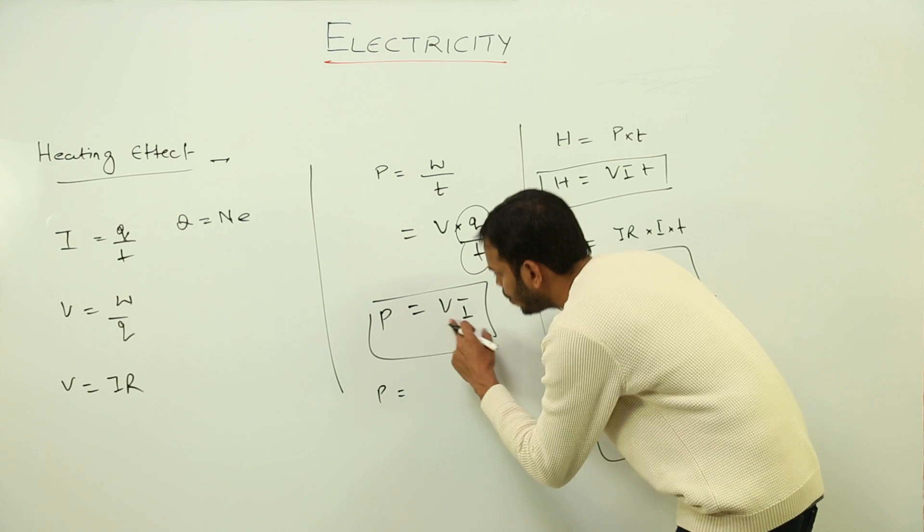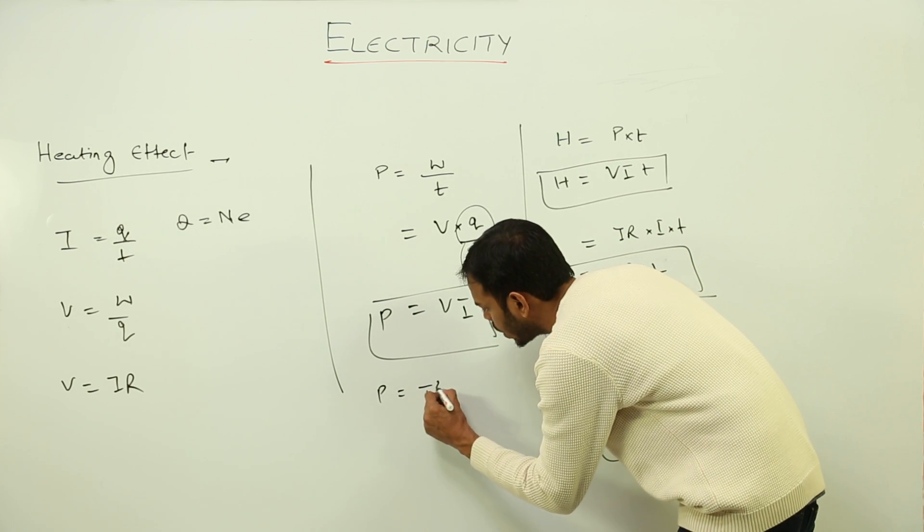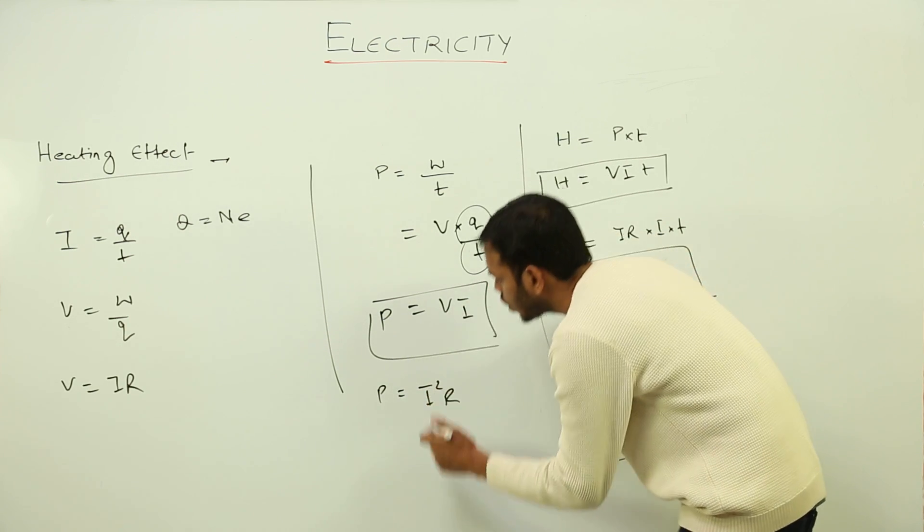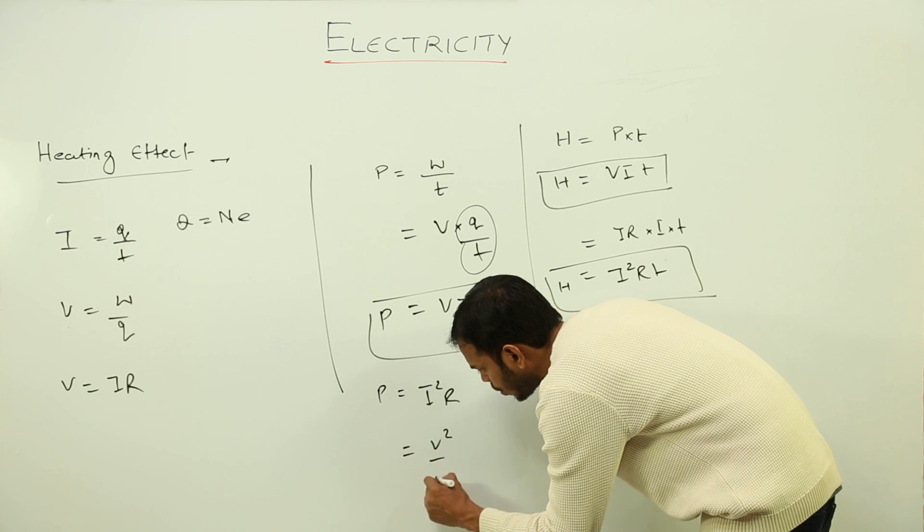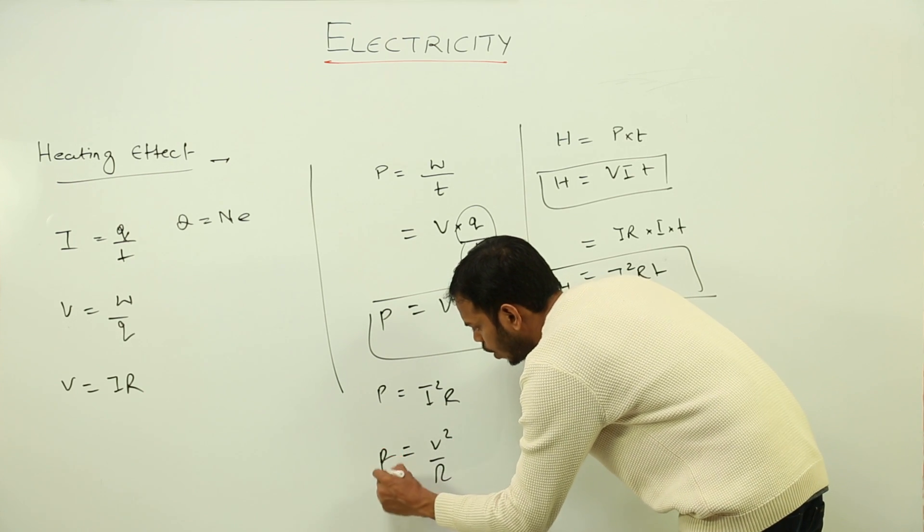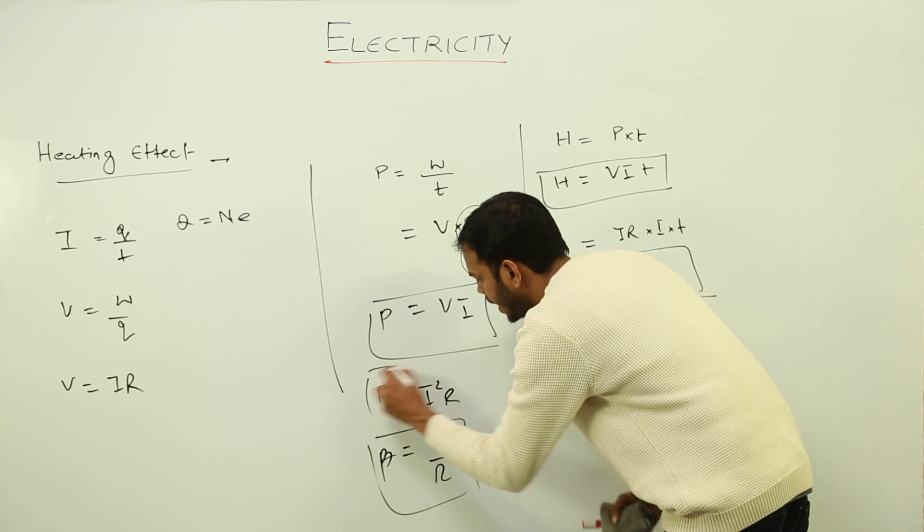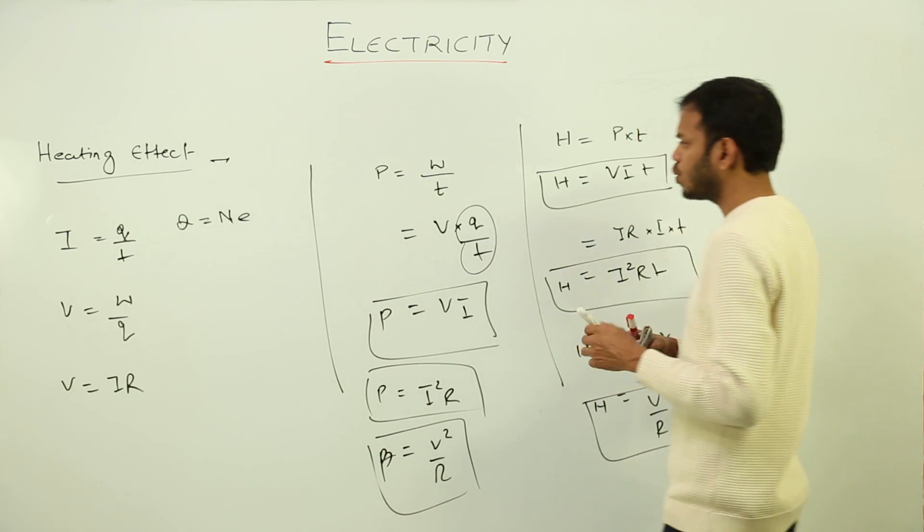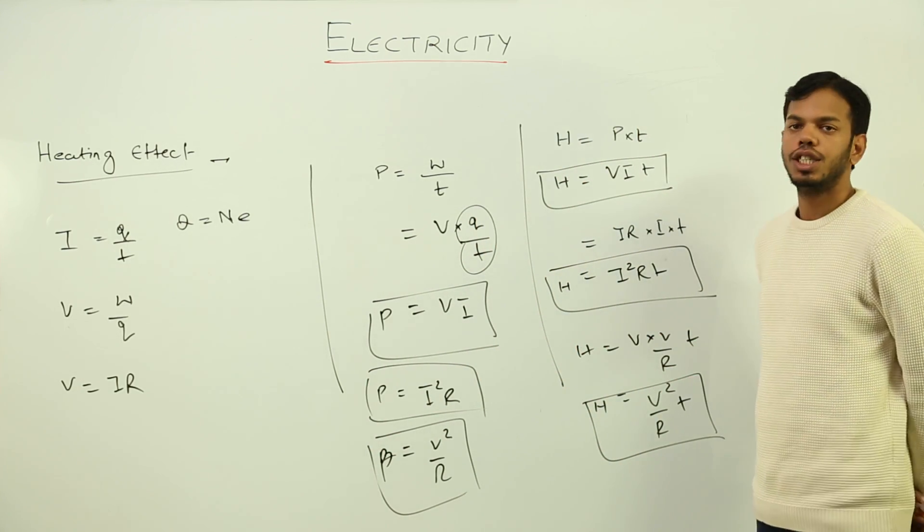Right, similarly you can find three values for power. Either it's VI, or put V equals to IR, I will get I²R. Or put I is equal to V upon R, so I will get V² upon R. So I also have three formulas for power as well. And this is the power associated and heat generated in a circuit.